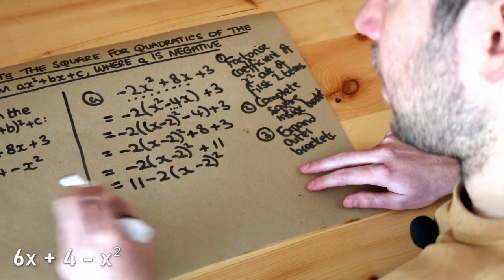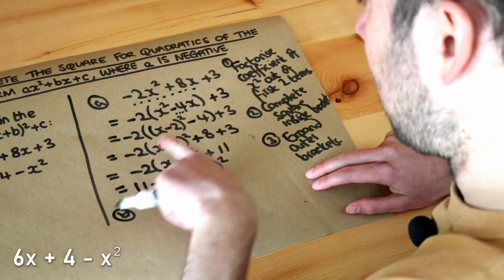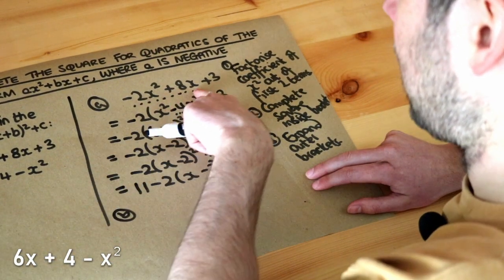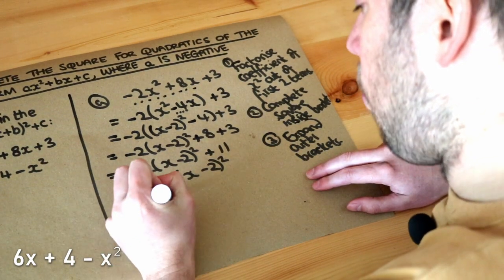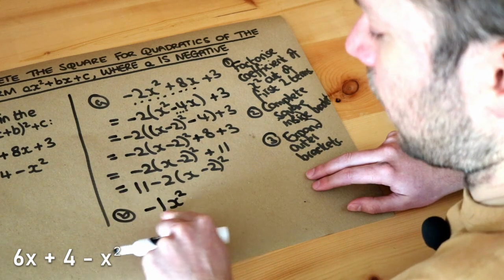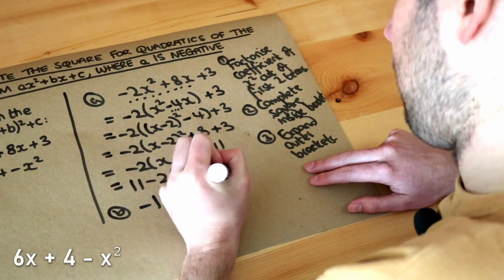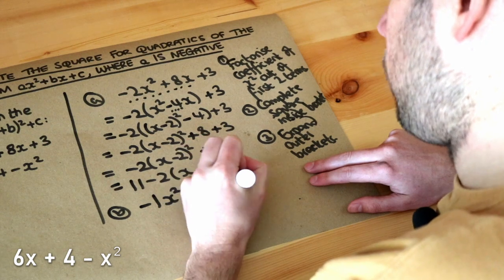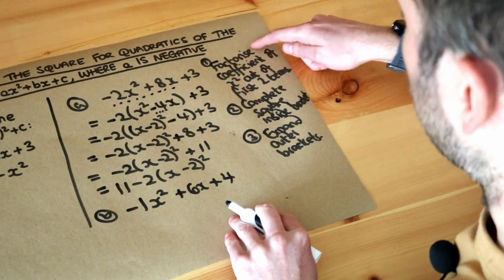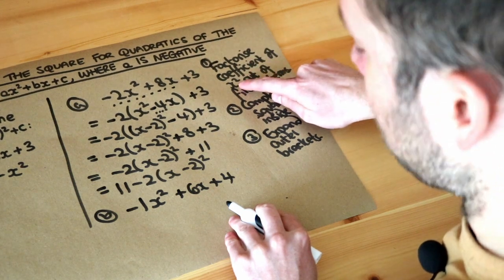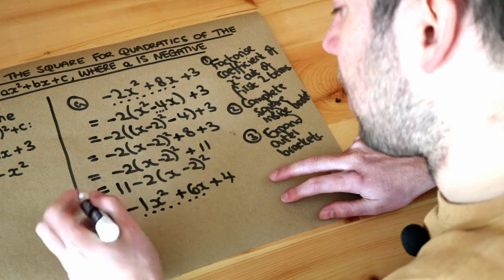For the second example, as before, we write it in the form something x squared plus something x plus something. So we put the minus x squared term first — I'm going to write a 1 on the front because minus x squared is the same as minus 1 x squared. Then we've got plus 6x and plus 4. Then we do exactly the same as before: step 1 is to factorize the coefficient of x squared out of the first two terms.